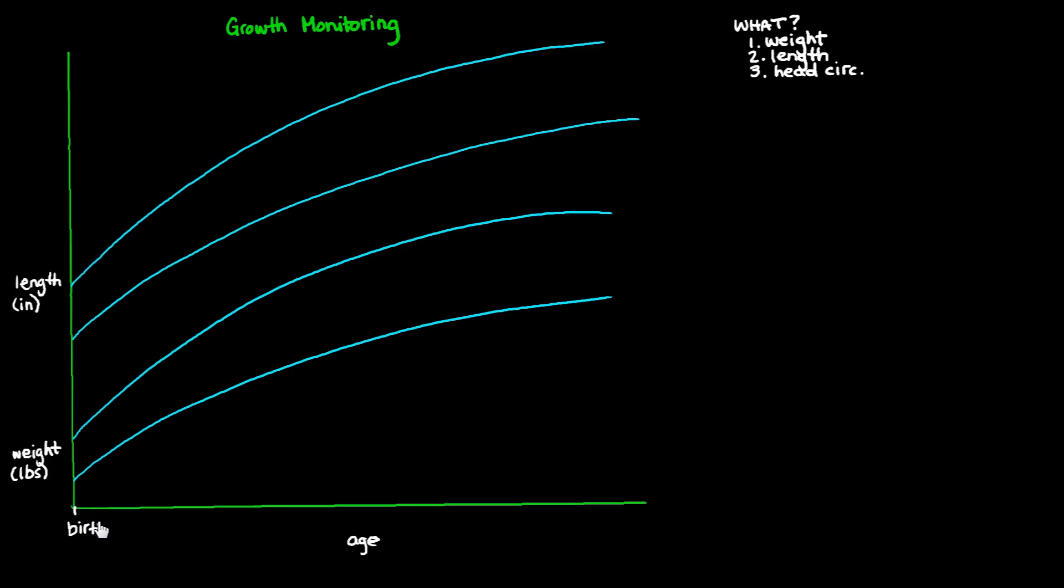And then a younger child's growth curve, or growth chart, usually goes up until three years of age. And then their data gets put onto a different kind of growth curve. So this would be one year of age, and this would be two years of age.